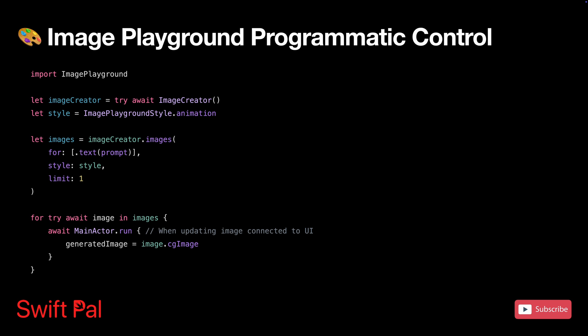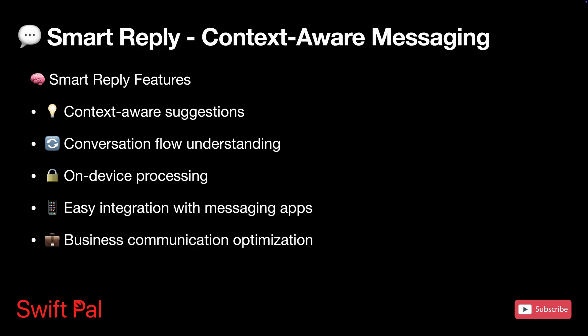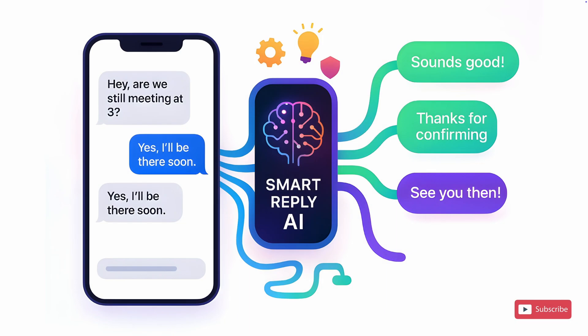Smart Reply might be even more practical for most developers. It showed up in iOS 18.4 and addresses a real pain point in messaging apps. Instead of those generic 'Thanks' and 'Sounds good' suggestions we've all seen, Smart Reply actually understands conversation context and generates relevant responses. It's not just looking at the last message — it's analyzing the entire conversation flow, understanding what's being discussed, and generating replies that actually make sense in context.